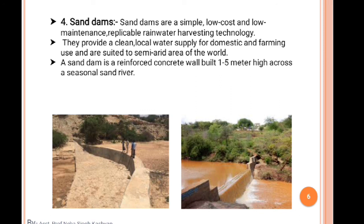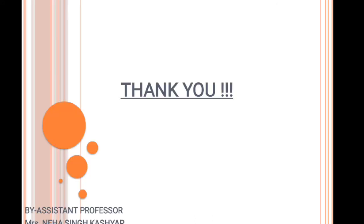Finally, we have completed our water harvesting system. We have seen different types of water harvesting structures, including some traditional ones — surface runoff water harvesting, roof runoff water harvesting, runoff-induced water harvesting, in-situ and ex-situ, and flood water harvesting. I hope you all understood the topic. Thank you very much — till then, be safe, take care.